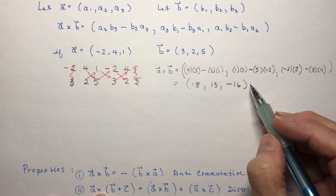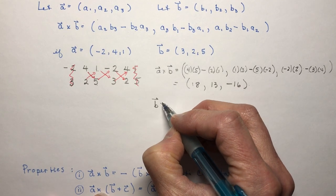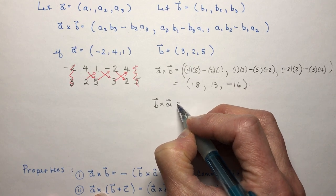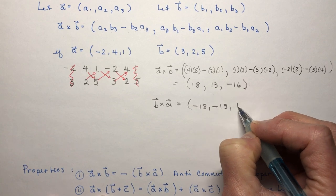So that's a cross b that's not the magnitude this is the vector product sometimes you hear them calling vector products or cross product. So if I wanted to know what b cross a was it would be the negative of this so it would be minus 18 minus 13 and 16.